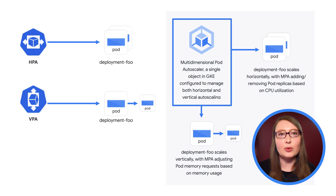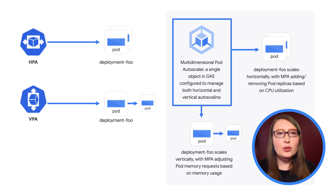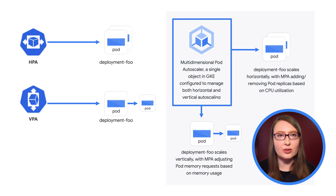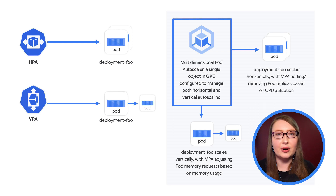Luckily, GKE has a tool to make that easier too. A newer addition to GKE's portfolio of autoscalers is the multidimensional pod autoscaler. This new tool combines the horizontal and vertical pod autoscalers to intelligently and automatically scale your workloads, both in terms of their number and their resource requests and limits. This can help to prevent any potential for clashes if, for example, HPA and VPA were set to scale on the same metrics.